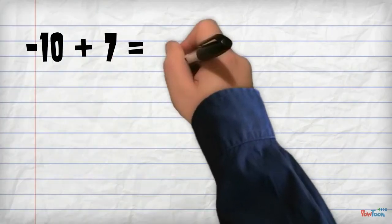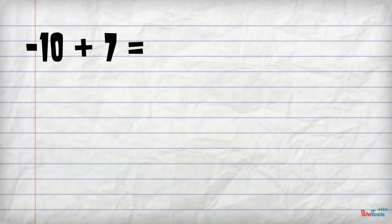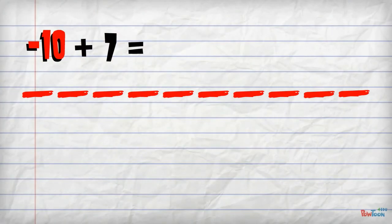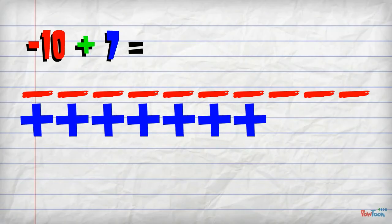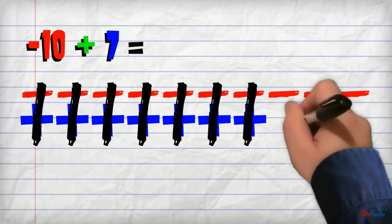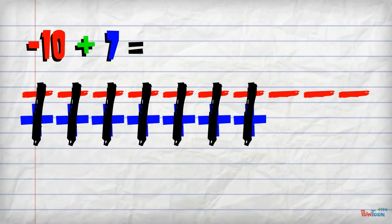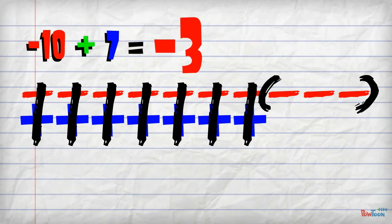What about this problem? Negative 10 plus 7. Start with 10 negative tiles, then add on 7 positive tiles. Cross out all the zero pairs. Circle your answer of negative 3.